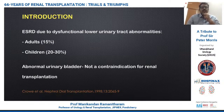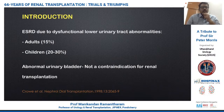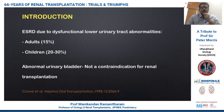ESRD due to dysfunctional lower urinary tract abnormalities accounts for about 50% of kidney transplants in adults and about 20-30% in children. As transplantation has progressed over the last five to six decades, an abnormal urinary bladder is found to be not a contraindication for kidney transplant.